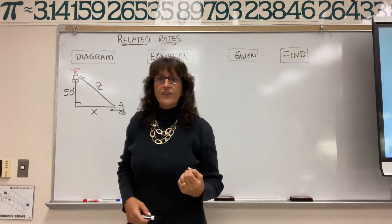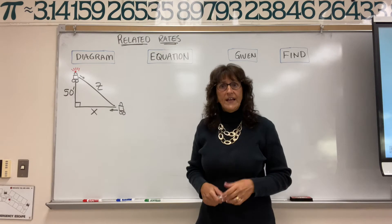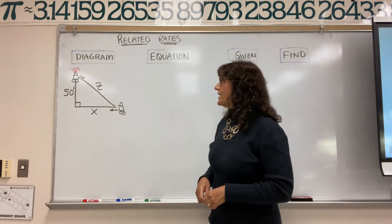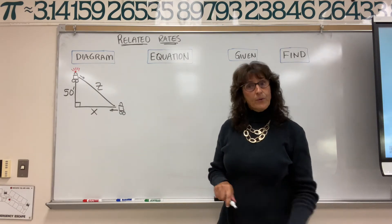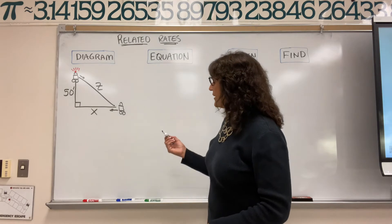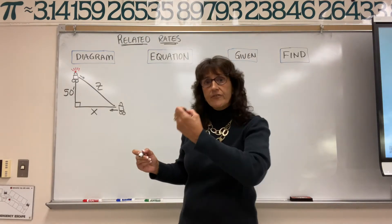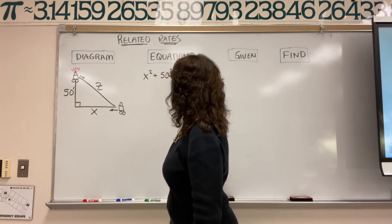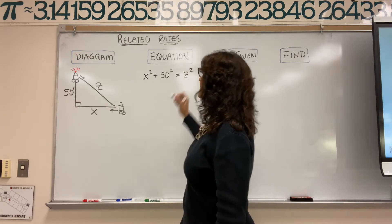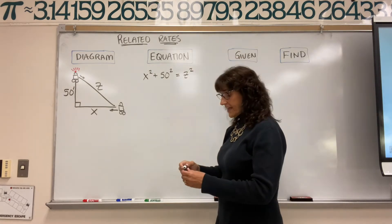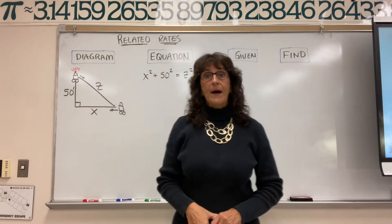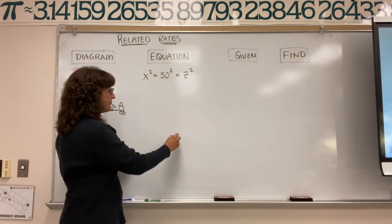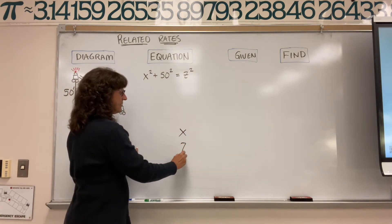Here's our diagram. We want to write an equation that relates the variables. Our variables are the sides of a right triangle. So what equation from a math class that you might have used to relate the sides of a right triangle? That would be the Pythagorean theorem. Setting up Pythagorean theorem: we take X squared plus 50 squared — the sum of the squares of the legs — set equal to Z squared, the hypotenuse squared. Here is our equation that relates the variables.